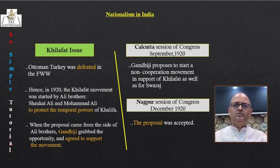Gandhiji went to London in December 1931 as the sole representative of Congress for the whole country. Others like Indian princes and Hindu, Muslim and Sikh communal leaders claimed to represent only their respective communities and were not interested in India's independence — they were interested in their own share of power. No agreement could be reached and the conference ended in failure. Gandhiji had to return with disappointment.